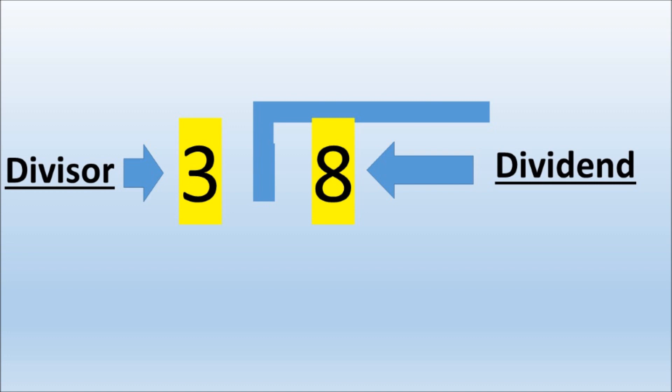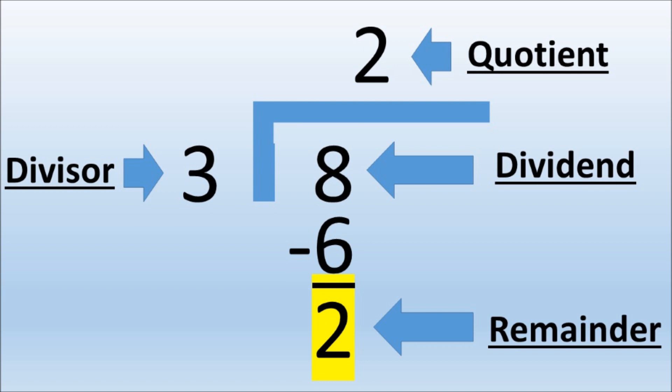3 goes into 8 two times, so 2 is the quotient. 3 times 2 equals 6, which we subtract from 8, leaving a remainder of 2.